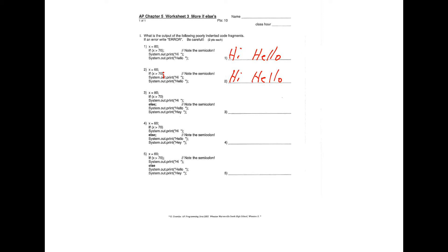In part three: x equals 80, if x is greater than 70 then print 'hi' — 80 is greater than 70, so 'hi' prints. There's an else statement, but with that semicolon the else ends immediately. Then the remaining lines print 'hello' and 'hey' every single time. A good fix would be to add brackets. These examples are written intentionally to test whether you understand how if and else statements work.